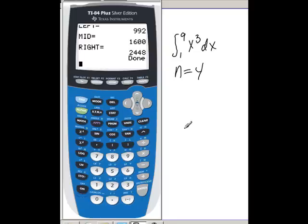What's kind of cool is if you run the program multiple times with larger and larger values of n, you should see that the left, the mid, and the right, these numbers all get closer to the same value.